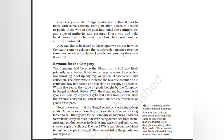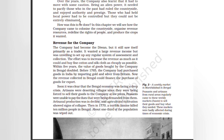In this chapter we will see how the company chose to colonize the countryside, organized revenue resources, redefined the rights of people, and produced the crops it wanted. The company had become the Divan but it still saw itself primarily as a trader. It wanted a large revenue income but was unwilling to set up any regular system of assessment and collection. Within five years the value of goods bought by the company in Bengal doubled.